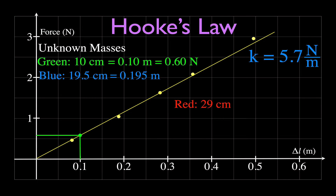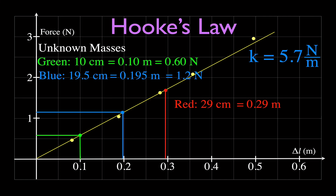For the blue mass, 19.5 centimeters is 0.195 meters — about 0.2 m. Going up to the line and over to the force axis, that gives about 1.2 newtons. For the red mass, 29 centimeters is 0.29 meters. Going up to the line and over, that gives about 1.7 newtons. So we now know the change in length for each unknown mass and the force that corresponds to each length.